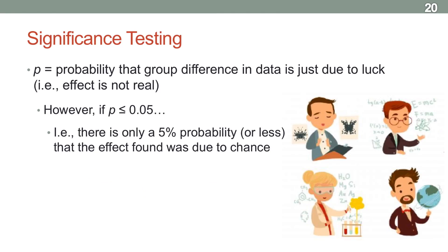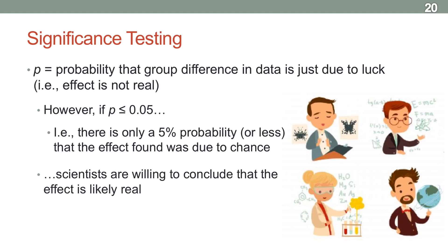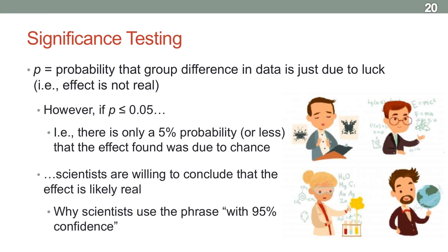Our usual cutoff is a p-value at or below 0.05, or 5 percent. We use this across all the sciences — psychology, chemistry, biology. If p is at or less than 5 percent, that means there's only a 5% chance that any effect we found is just due to chance. That means there's a 95% chance this is a real effect — that the experimental findings reflect something real in the population. So if we get a p at or below 0.05, we're willing to conclude that this effect is likely real.